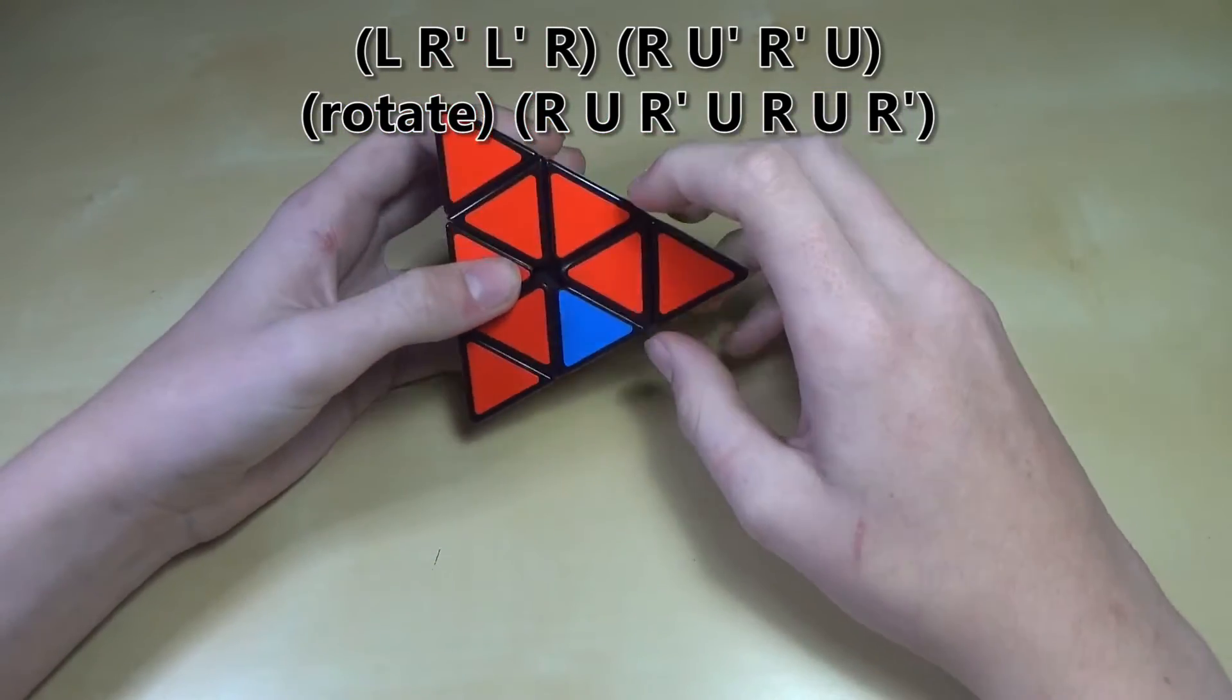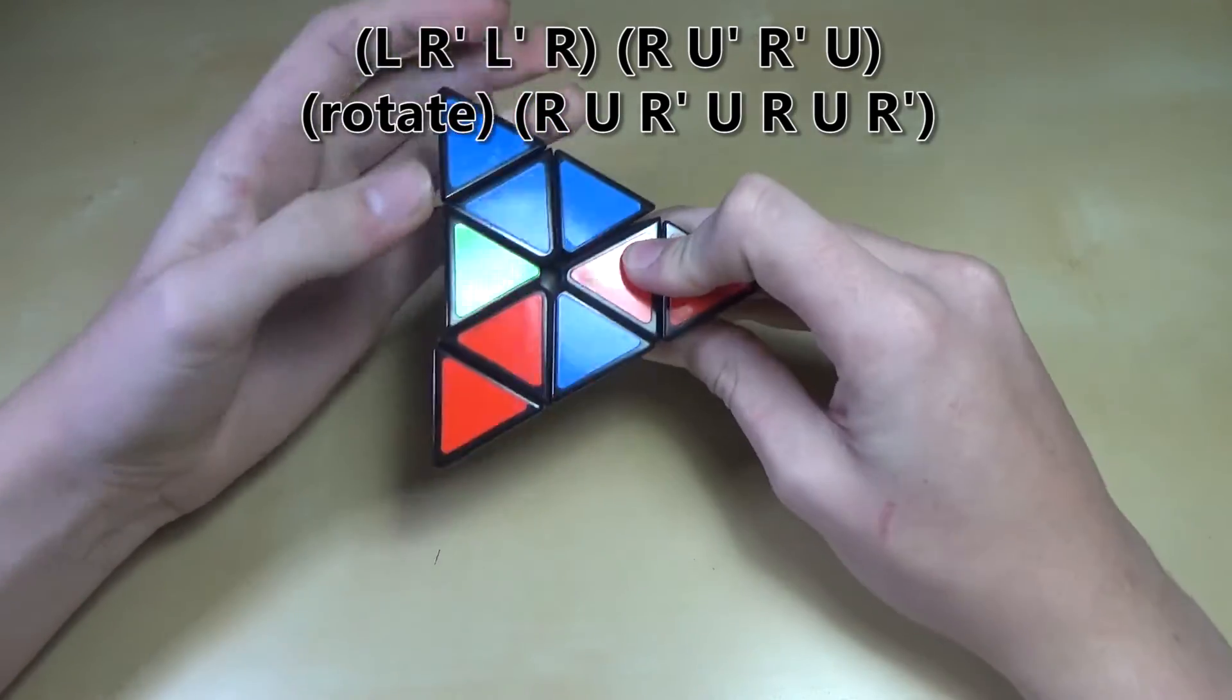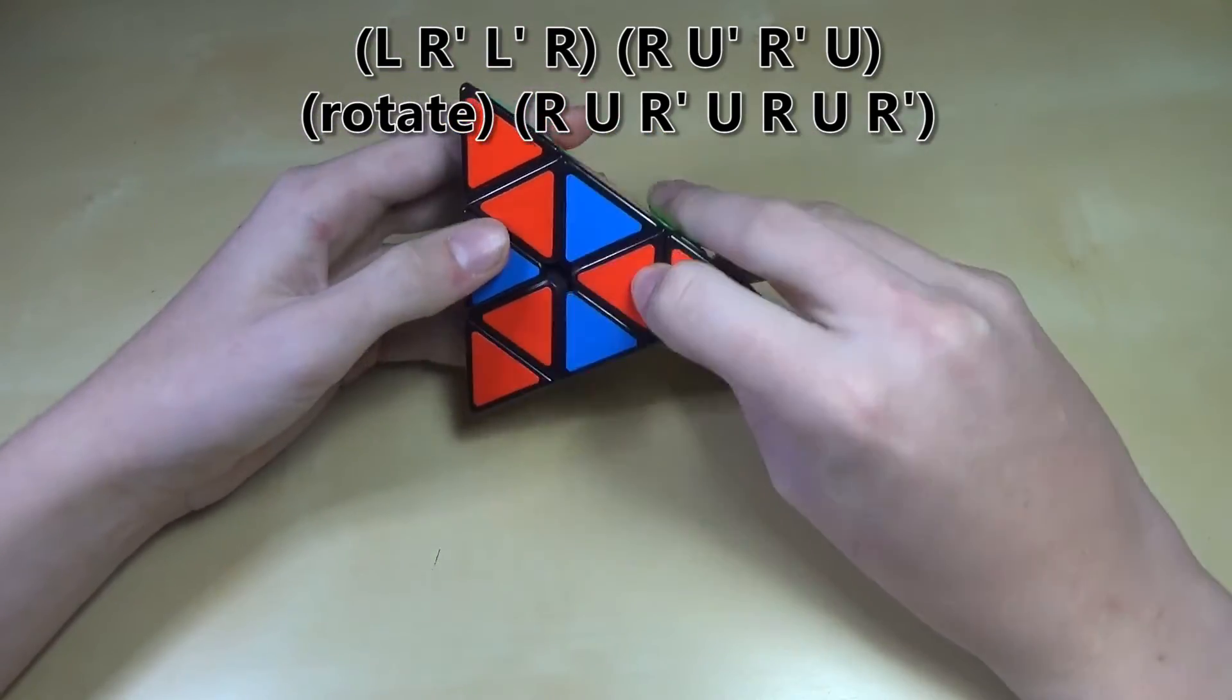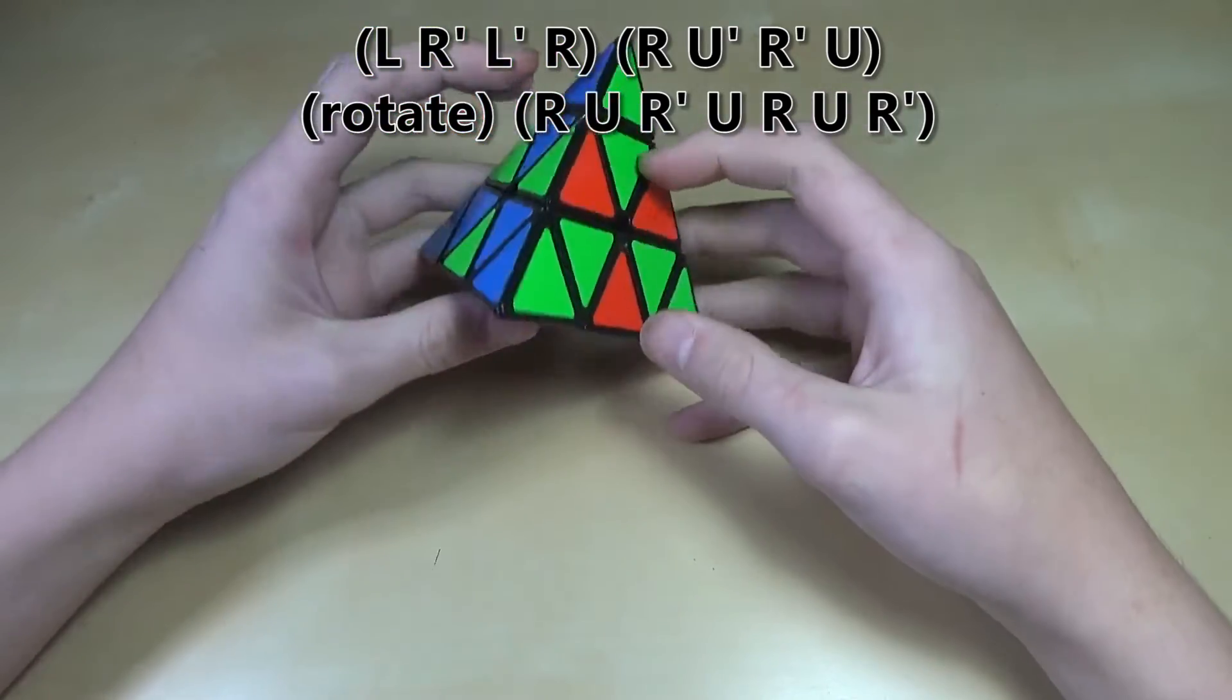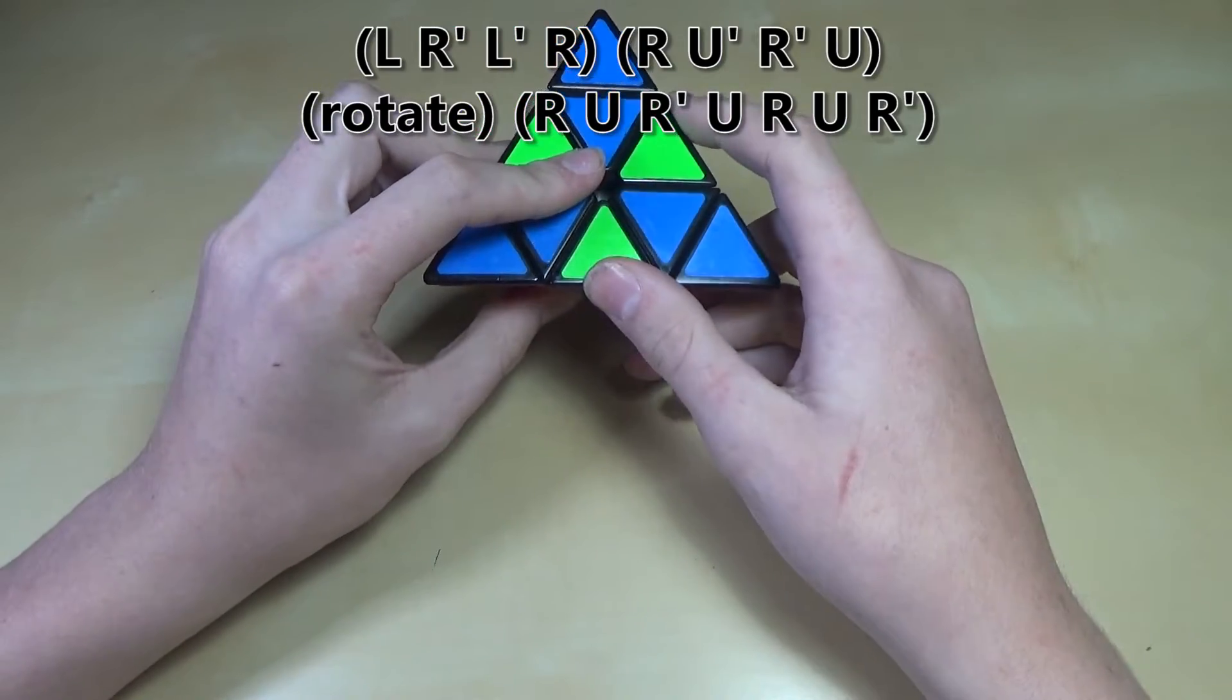And then from here what you can do is you can do R U R', U R', U R' just like that. Those two algorithms, one of them switch around these three and the other one switch around these three.